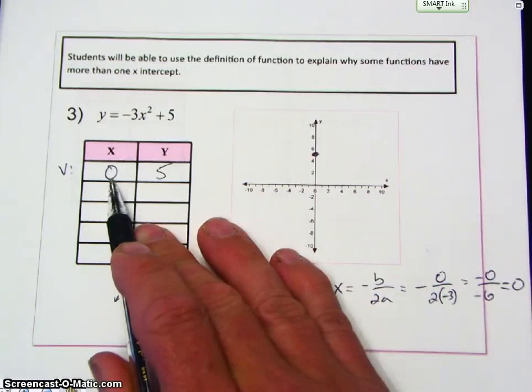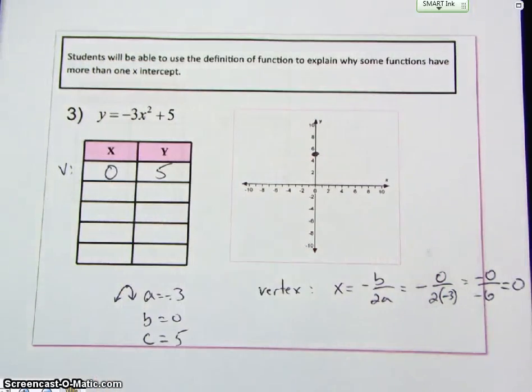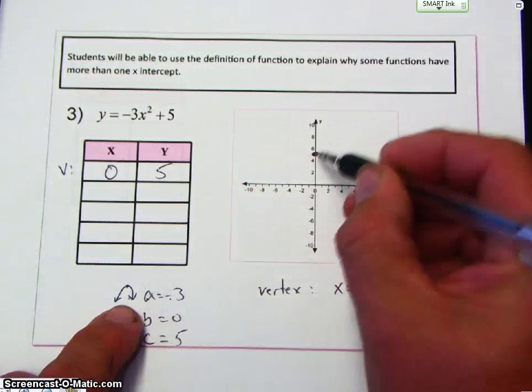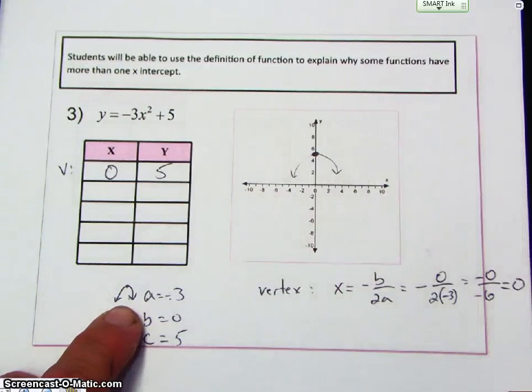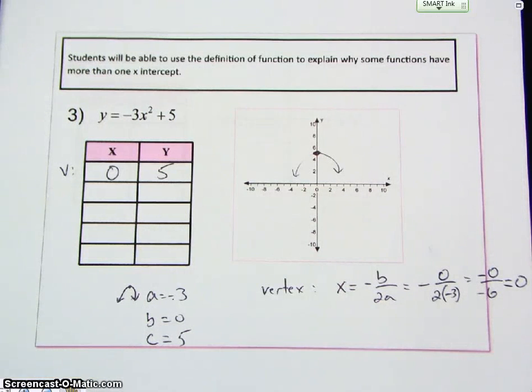So we can't find the y intercept because we already found it. It's the same as the vertex. It goes 0, 5. Since that's 0, that means it's a y intercept. Now my graph opens down. So I have to come up with another point. In order to come up with another point, then I can reflect it. Therefore, I can sketch my curve.